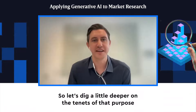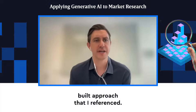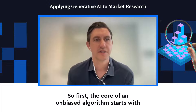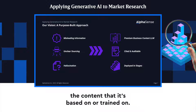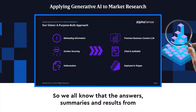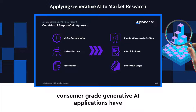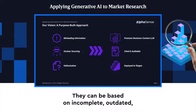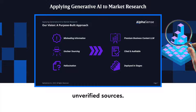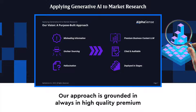Let's dig a little deeper on the tenets of that purpose-built approach. The core of an unbiased algorithm starts with the content it's based on or trained on. We all know that the answers, summaries, and results from consumer-grade generative AI applications have issues with accuracy — they can be based on incomplete, outdated, or unverified sources.